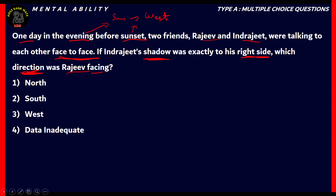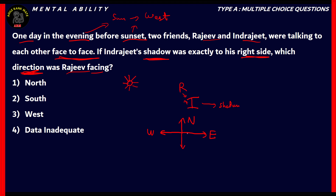We have two friends talking face to face, so Rajiv is facing Indrajeet and Indrajeet is facing Rajiv. Indrajeet's shadow is to his right side, which means the sun is to his left side. Since it's evening, the sun is in the West, so Indrajeet's left side is West and his right side is East. This means Indrajeet is facing North, while his back faces South.